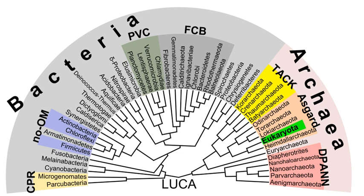At least some prokaryotes also contain intracellular structures that can be seen as primitive organelles. Membranous organelles are known in some groups of prokaryotes, such as vacuoles or membrane systems devoted to special metabolic properties such as photosynthesis or chemolithotrophy. In addition, some species also contain carbohydrate-enclosed microcompartments with distinct physiological roles, such as carboxysomes or gas vacuoles. Most prokaryotes are between 1 micrometer and 10 micrometers, but can vary in size from 0.2 to 750 micrometers.